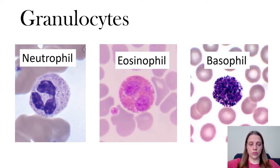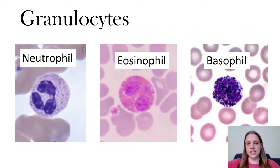If the answer is yes, the next thing you need to do is look at the color. The neutrophils will usually be paler than the red blood cells around them. The eosinophil will be more red, and the basophil is very dark, dark purple.